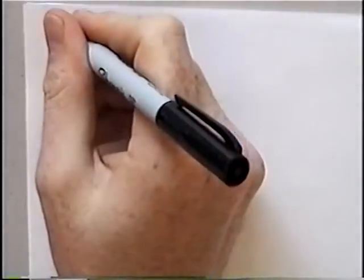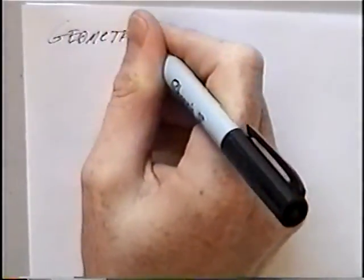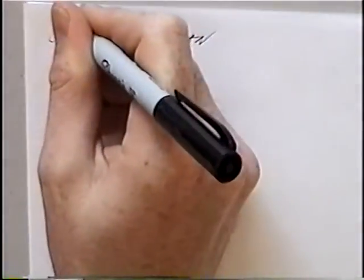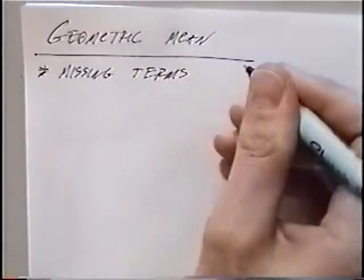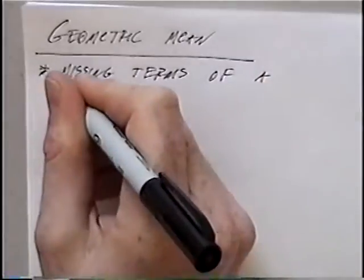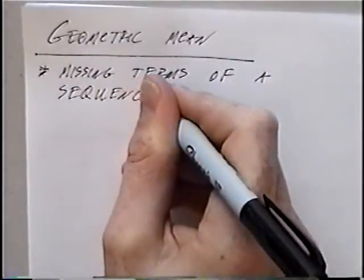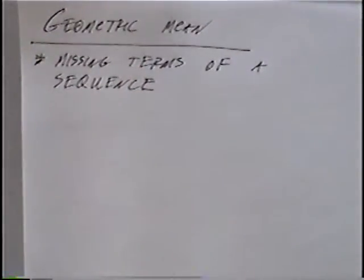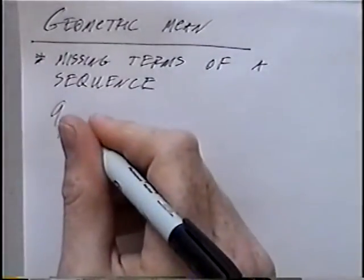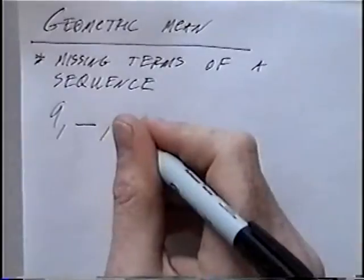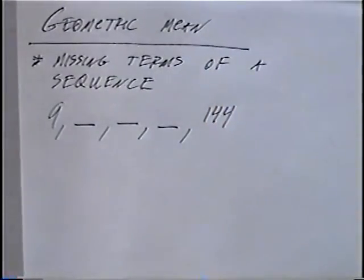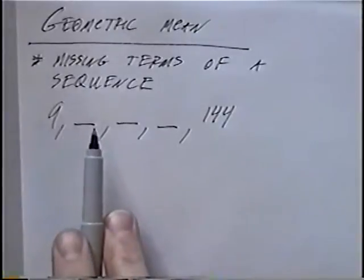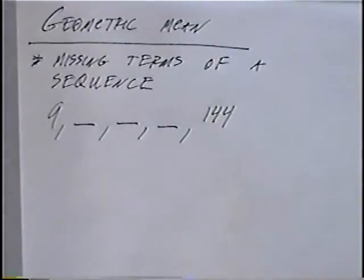The last section is titled 'Geometric Mean.' The geometric mean refers to the missing terms of a sequence. The first sequence has 9 as the first number, followed by three blank spots we need to find, and 144 as the last number. So the first number is 9, we want to find three missing numbers, and the fifth number is 144.